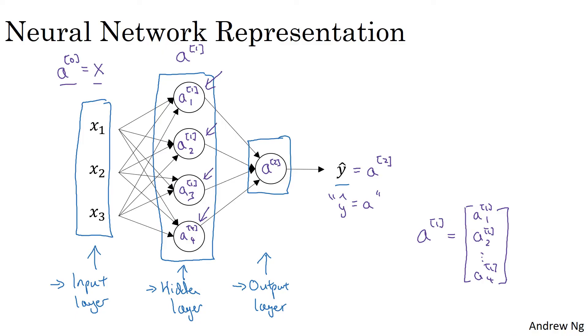But with a neural network, we're now going to use the superscript square bracket to explicitly indicate which layer it came from.